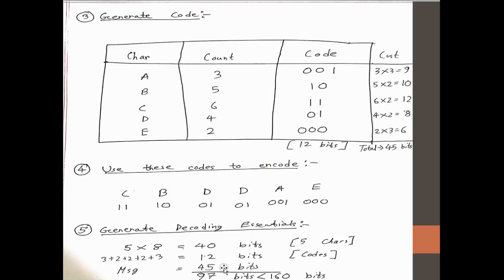12 over here and 45 over here. Now why 40? Because you have 5 characters and each of them is 8. This part you know. For this part we need 40 bits.